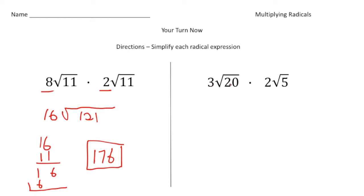So there is your first answer which is 176, perfect. All right, now take a look at this one. 3 radical 20 times 2 radical 5. So 3 times 2 gives us 6, and 20 times 5 gives us 100. And 100, again, it's a nice perfect square which is 10. So 6 times 10 gives us 60, and there's your answer. All right, how'd you do?